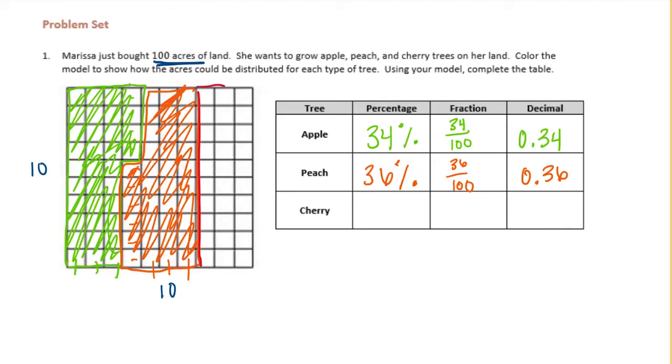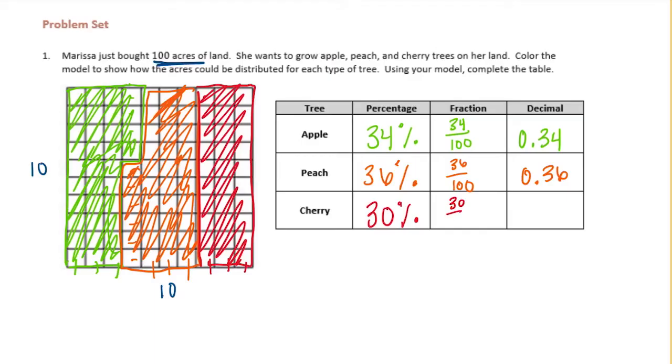And then cherries would be last, whatever's left over. So that is 1, 10, 20, 30, 30%, 30 hundredths. Or if you wanted to reduce it and make it three tenths, the decimal would be three tenths or 30 hundredths. So as long as the percentages add up to 100%, then whatever you do, however you decide to distribute the apple, peach, and cherry trees will be correct.